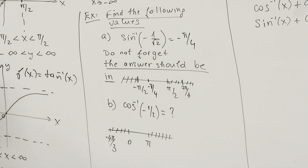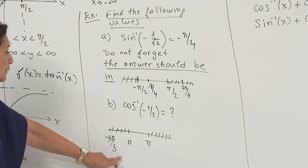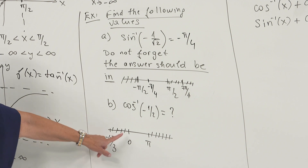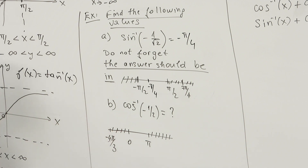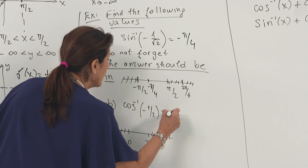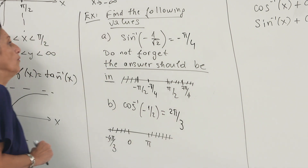What about the inverse cosine of minus 1/2? It asks which angle of cosine is equal to minus 1/2. We should notice that some angles are not the answer because they are outside the interval — the range of inverse cosine is from 0 to π. The answer is 2π/3.